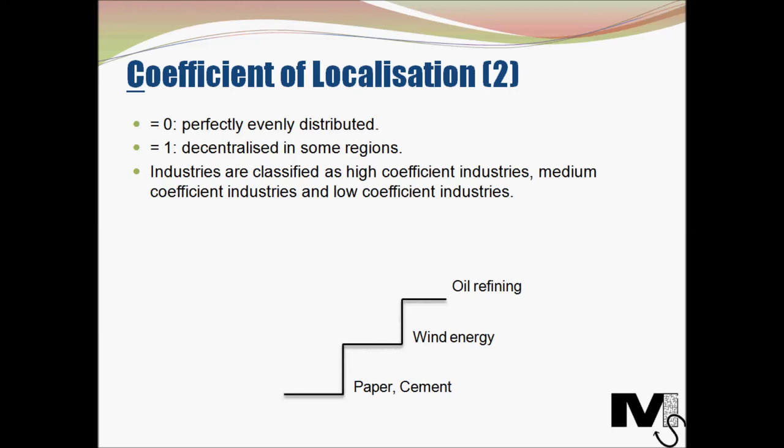So these are essentially the two primary components of Sargent's theory of location. There is a clear difference between the Location Factor and the Coefficient of Localization, and these two form the pillars on which Sargent's theory lies.